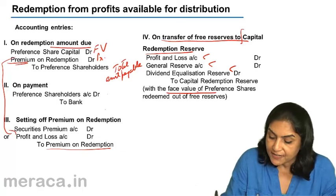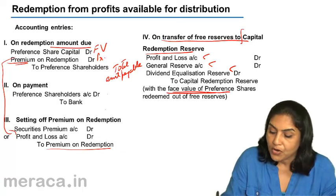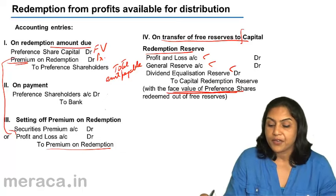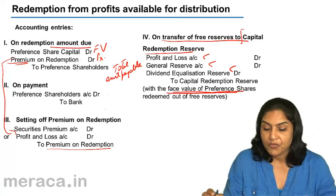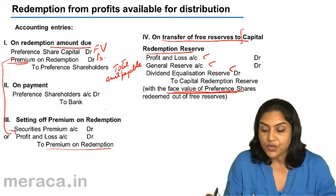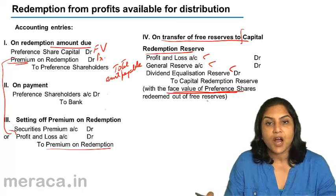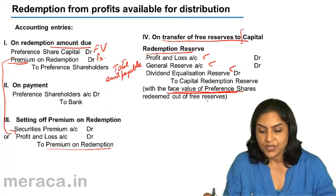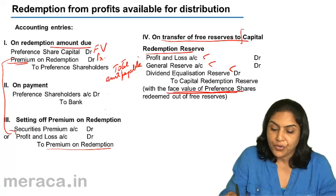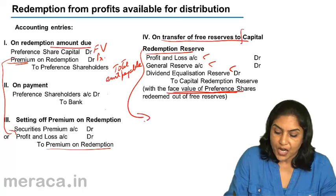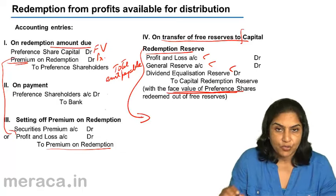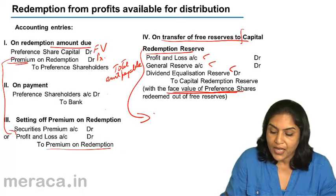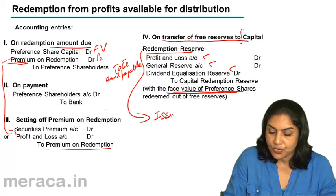The amount transferred is the face value of the preference shares redeemed out of free reserves. Mind you, the capital redemption reserve account can be used for only one purpose — that is, issue of bonus shares.